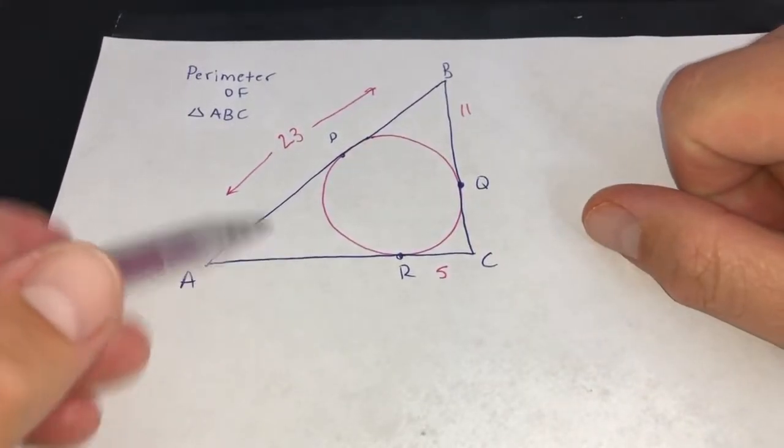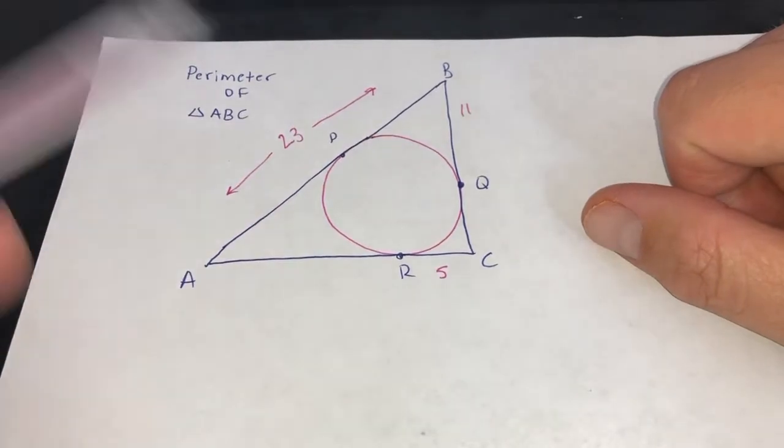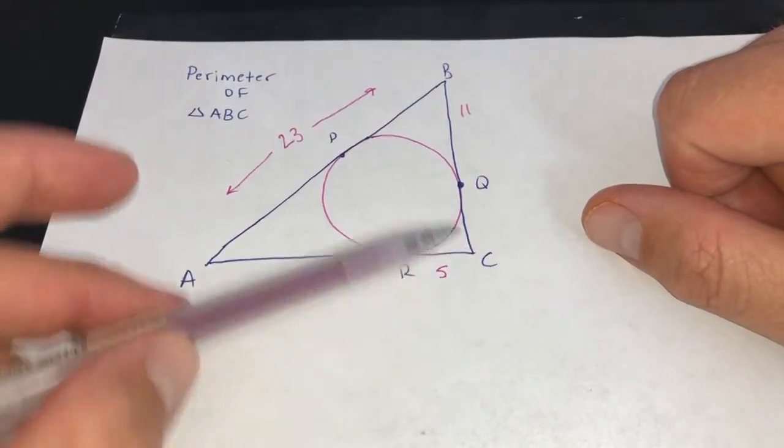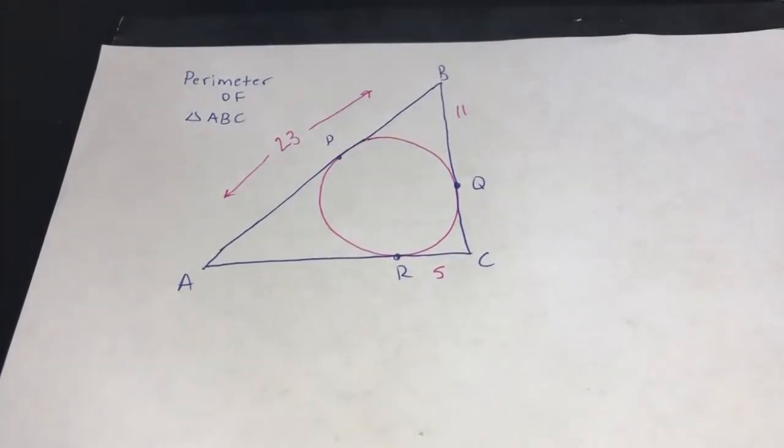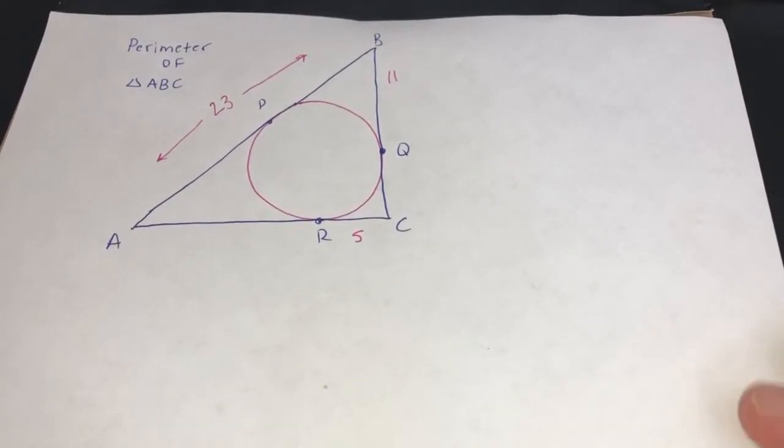We don't know this part or this part. Obviously, if we knew all the sides of the triangle, we'd just add them all up to get the perimeter. But there's a certain thing in geometry that will always hold true and that's going to help us solve the equation.